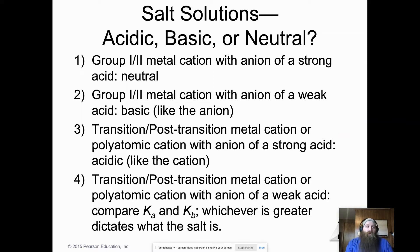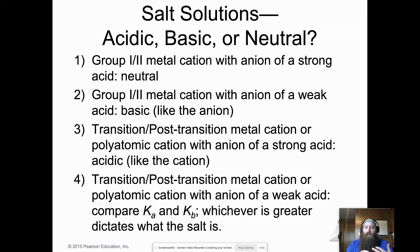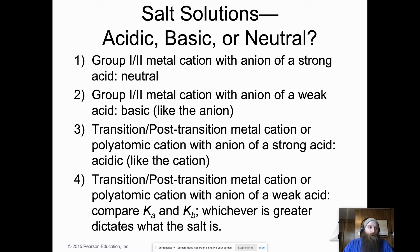Putting it all together for salt solutions: (1) Group 1 and 2 metal cations with anions of strong acids are neutral. (2) Group 1 and 2 metal cations with anions of weak acids are basic. (3) Transition/post-transition metal cations or polyatomic cations with anions of strong acids are acidic. (4) Transition metals or polyatomic cations with anions of weak acids — compare Ka and Kb; whichever is greater dictates the behavior.